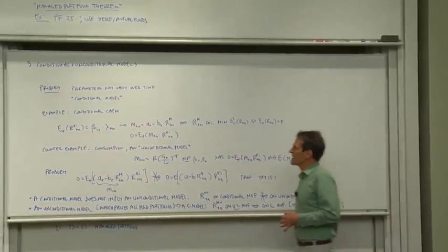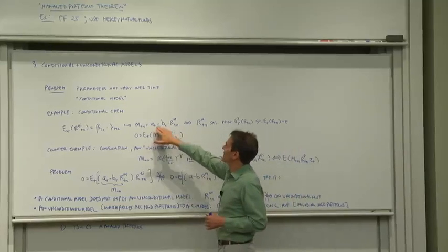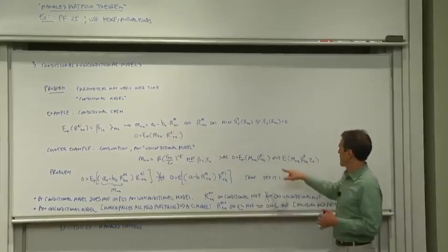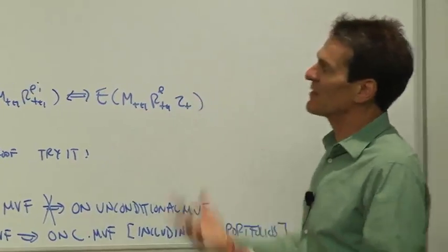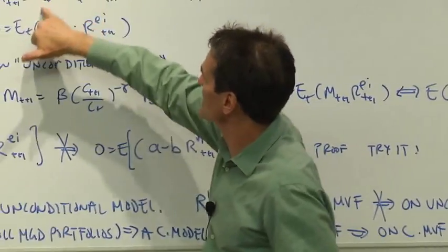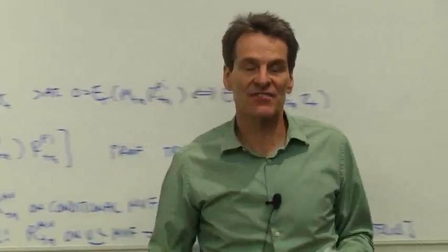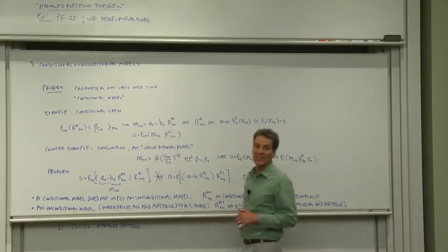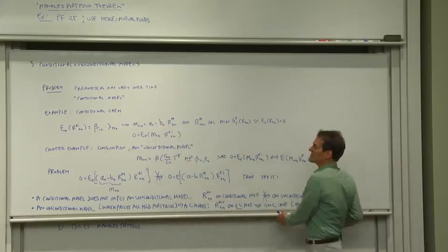The best you can do is let us try to model the conditioning information. So if we have, for example, a variable ZT, an instrument that we think is driving our conditioning information, the natural thing to do is let's make A and B functions of the ZT and create an explicit conditional model and see what we can do with that. That's a good idea.